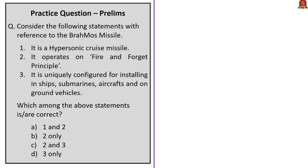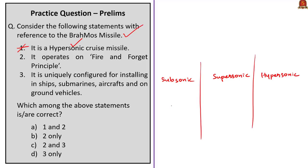This question is with reference to the BrahMos missile. Three statements are given. The first statement: it is a hypersonic cruise missile. This is incorrect — it is a supersonic cruise missile. Cruise missiles are unmanned self-propelled guided vehicles. Depending on speed, missiles are classified as subsonic (less than one Mach, i.e., less than 343 m/s), supersonic (around two to three Mach), or hypersonic (five Mach).